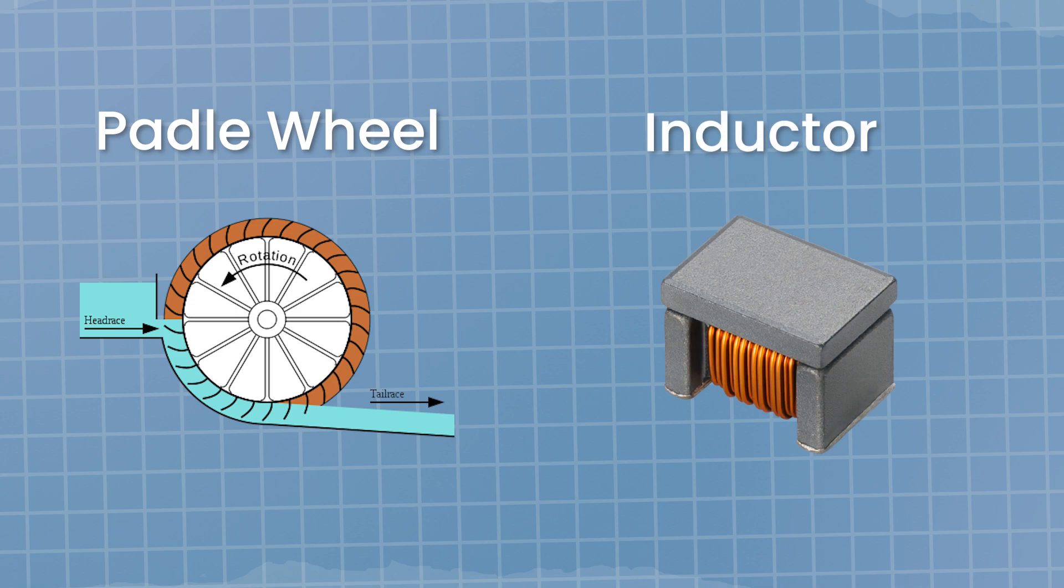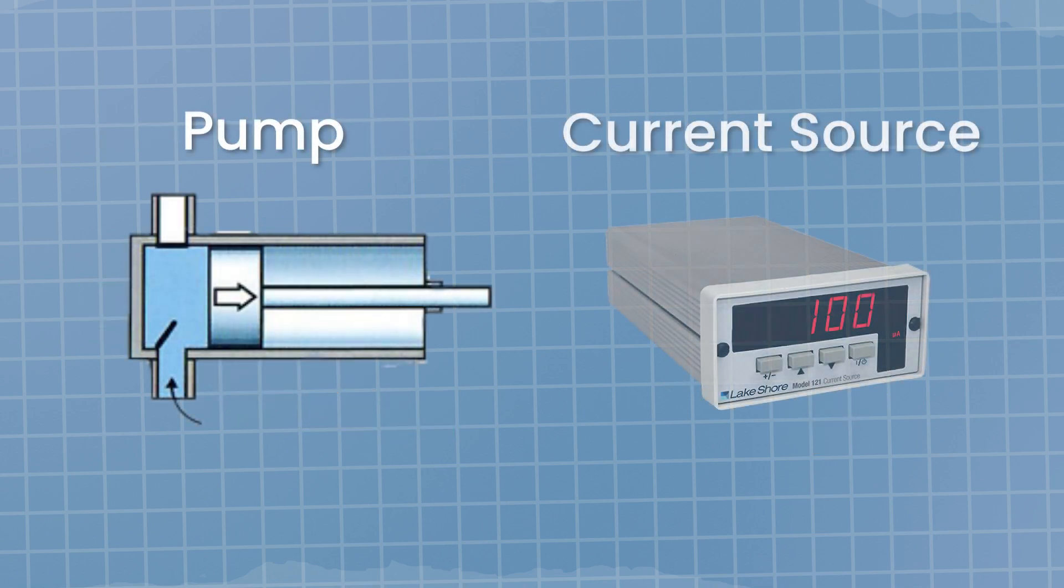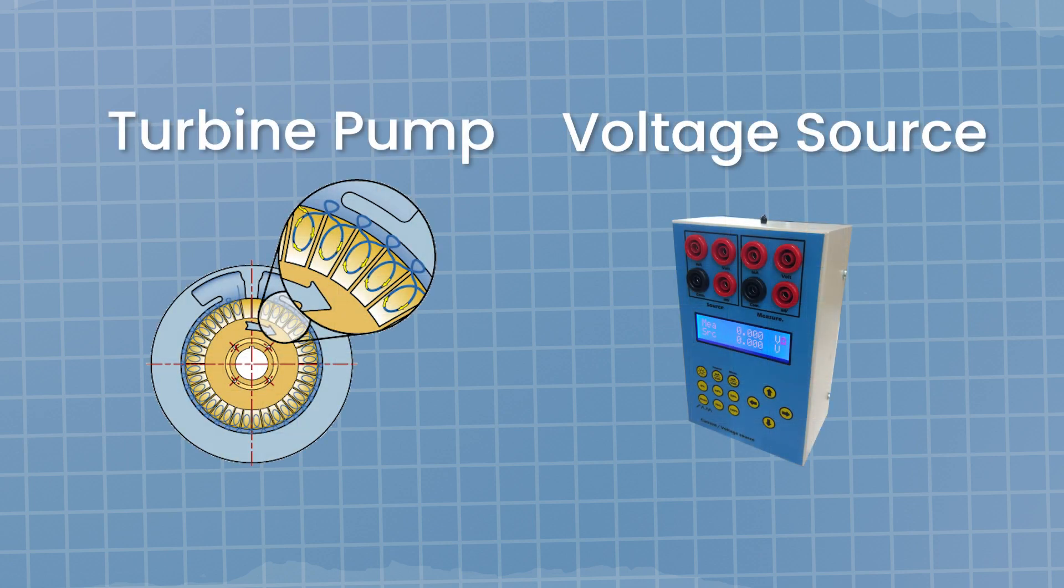A positive displacement pump, a current source, and finally a turbine pump, a voltage source. The corresponding elements in each system provide the same function regarding the storage and dissipation of energy. The equations are entirely the same.